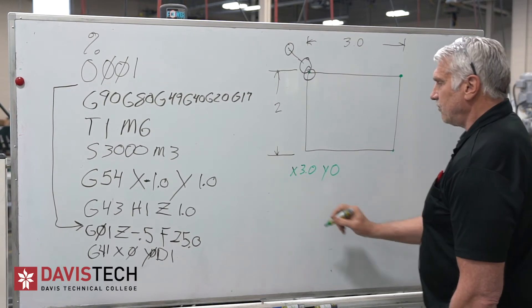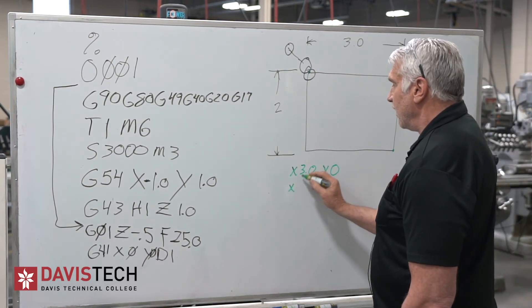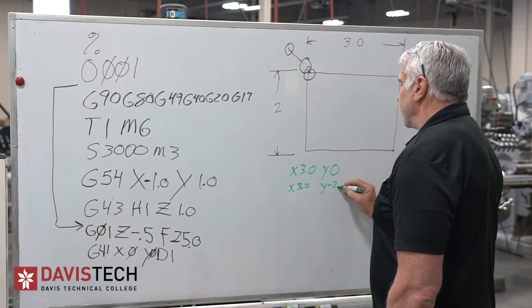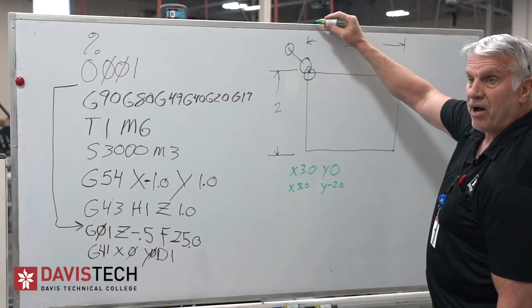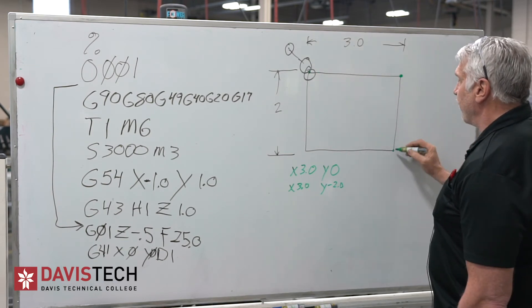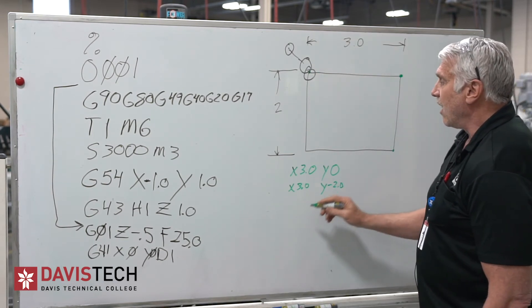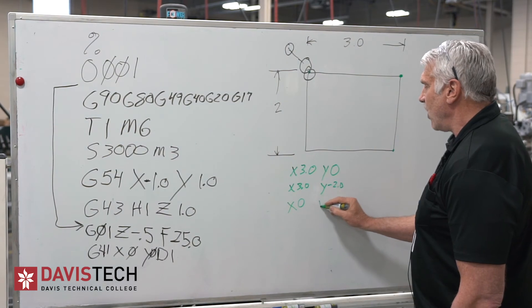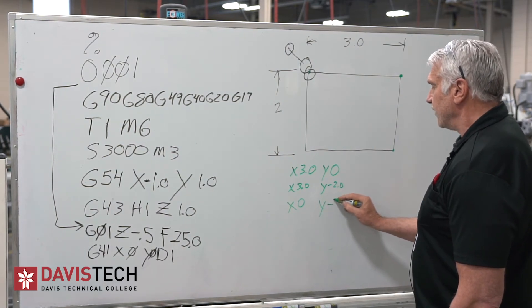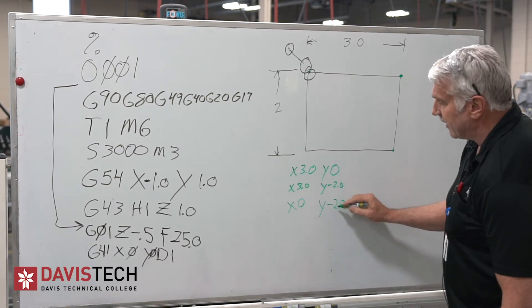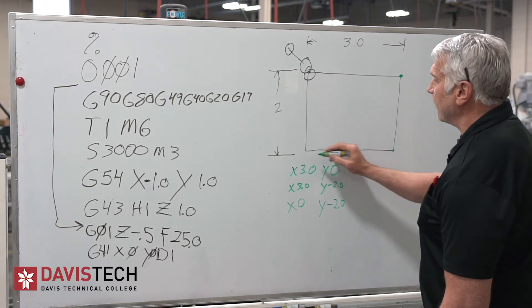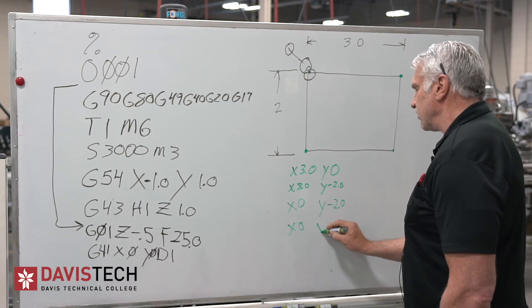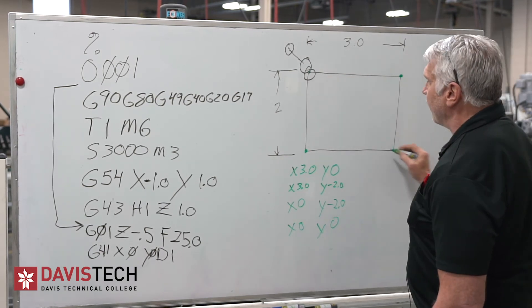My next move is right here. That's going to be X, it's still at three inches over, but now it's at Y negative two point. Because if we're calling that zero zero, anything above it is positive, anything below it is negative. We've said that this is a negative right there. Our next move is to this point right here, which is going to be X of zero and Y of negative 2.0. Do we have to write this again? No, we don't. It's already there. So that gets me to this point right here. My next move is to X of zero and Y of zero. Now I've just gone around the entire part.